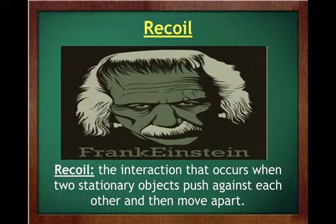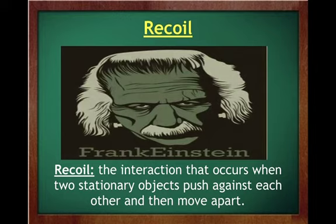Recoil is the interaction that occurs when two stationary objects push against each other and then move apart — instead of locking up and going together, they move in opposite directions. Think of a gun recoiling against your shoulder.